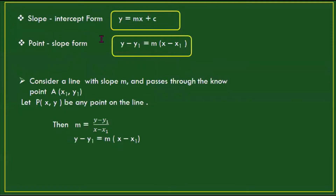We have the slope-intercept formula: y equals mx plus c. We also have the point-slope formula: y minus y1 equals m into x minus x1.